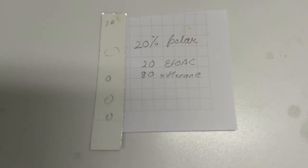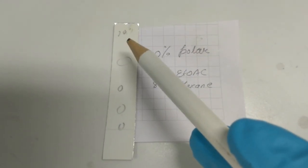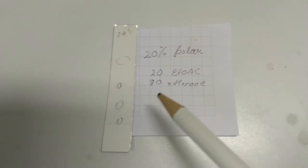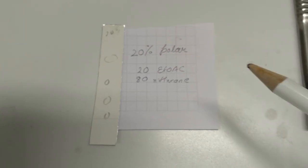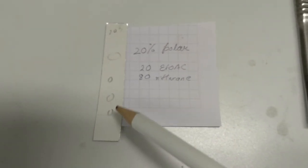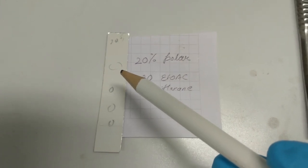Since I have already measured that at 20% polarity, which means 20 ml ethyl acetate and 80 ml n-hexane if we prepare a hundred ml solution, it's going to give a separation like this and it is a very good separation.